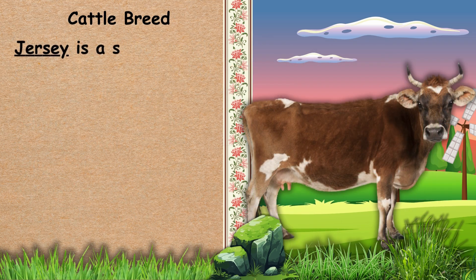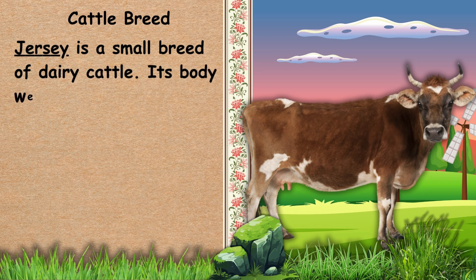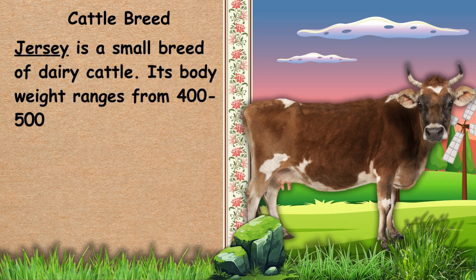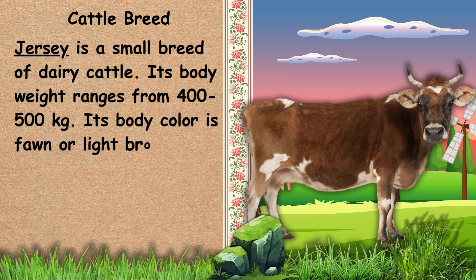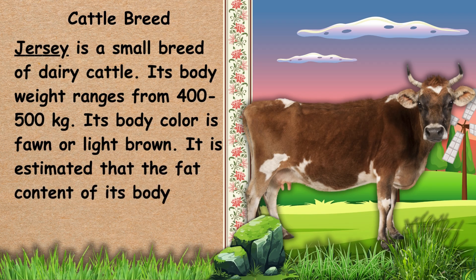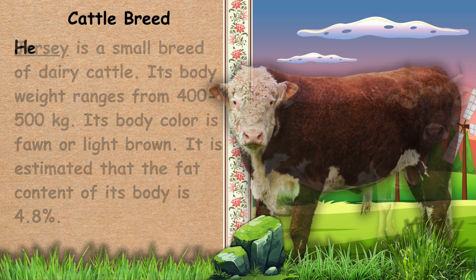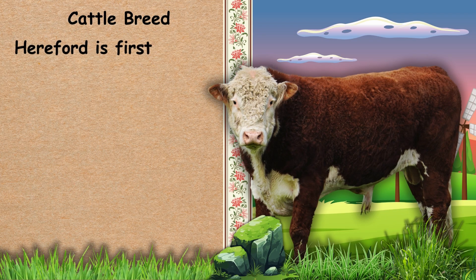Next, we have Jersey. Jersey is a small breed of dairy cattle. Its body weight ranges from 400 to 500 kg. Its body color is fawn or light brown. It is estimated that the fat content of its milk is 4.8%. Though it has high milk production, Frisian has a low fat content of 3.4%.